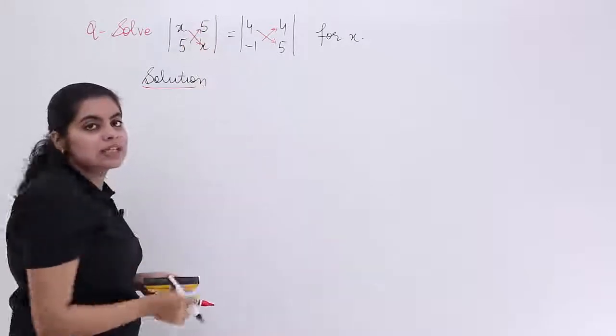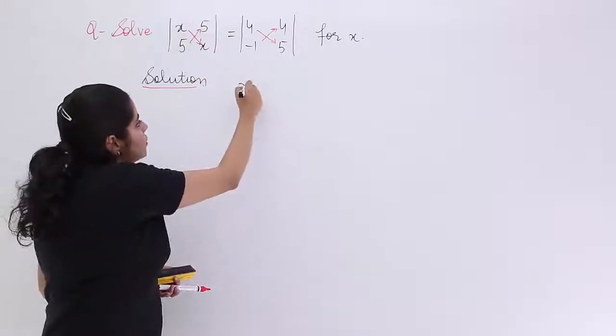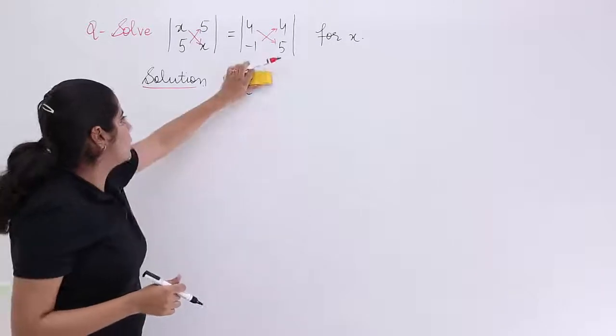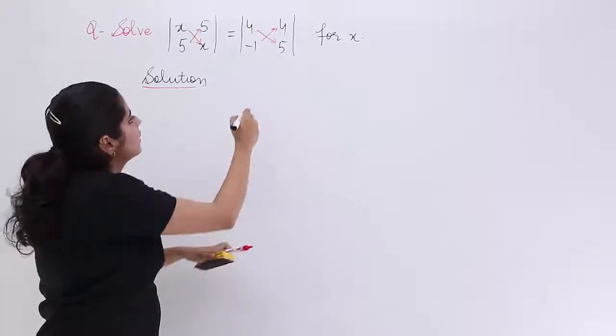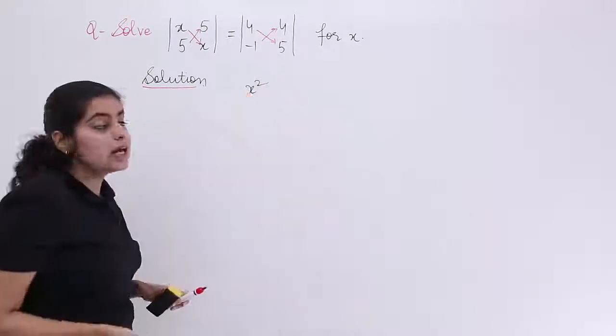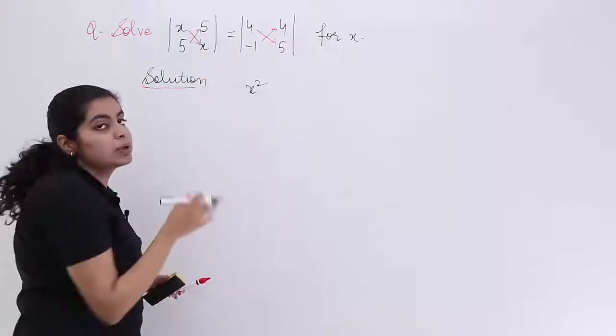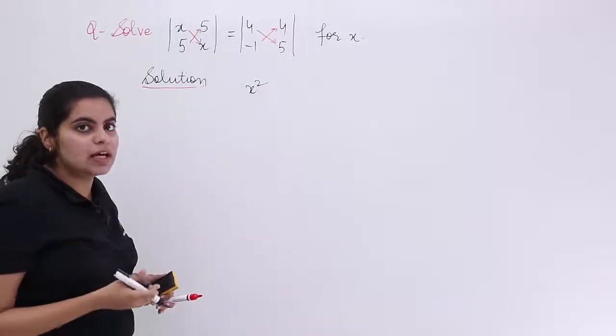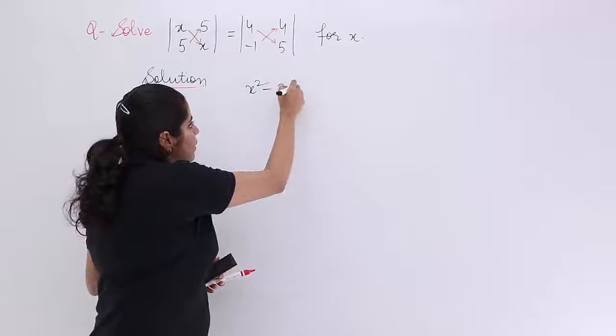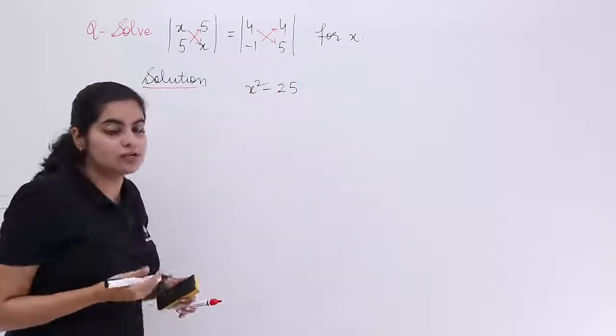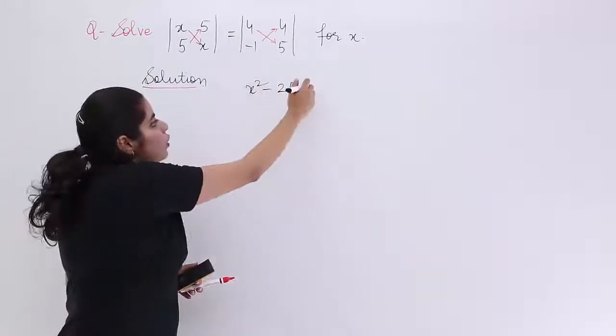So what is x into x? It is x². So I write here x². Next, 5 into 5 is 25. Now it would be minus 25. Why minus? Because it goes in the formula itself. Equal to, from the question.